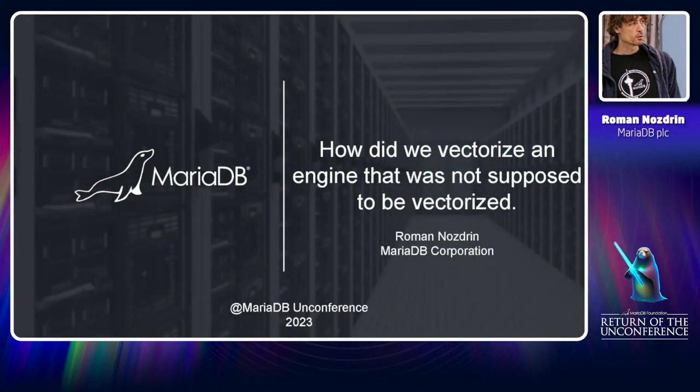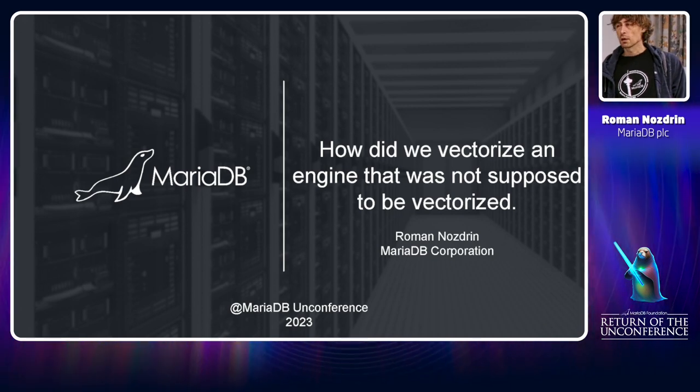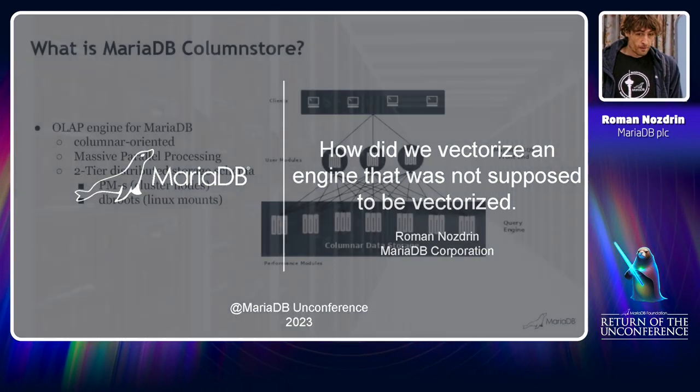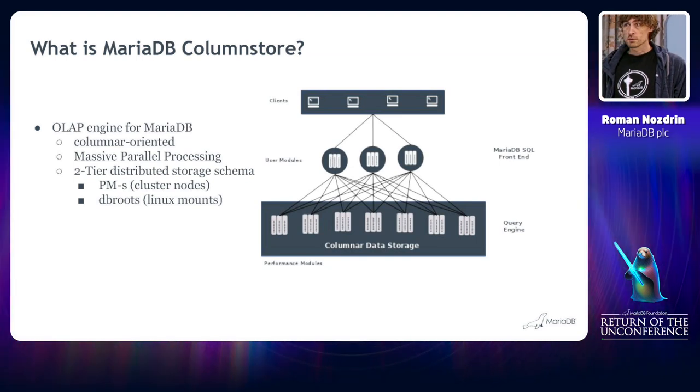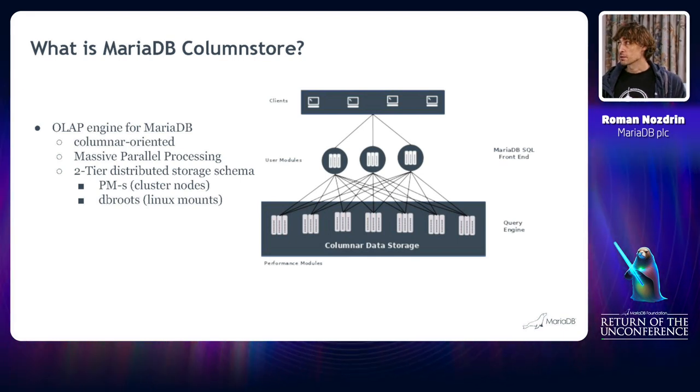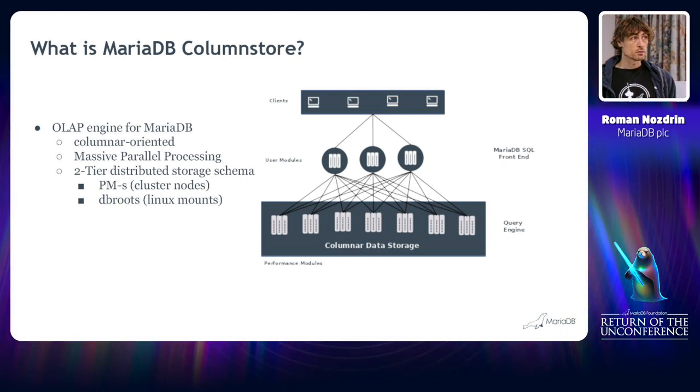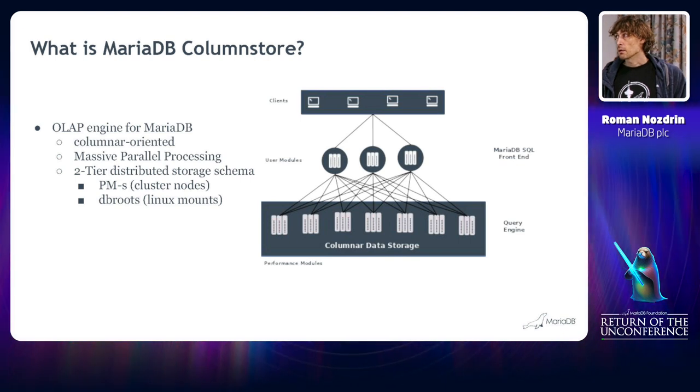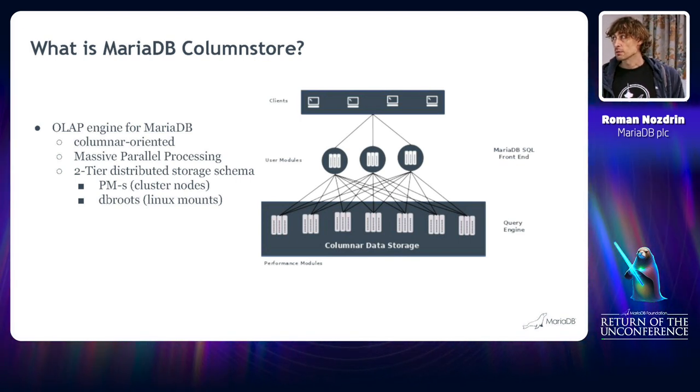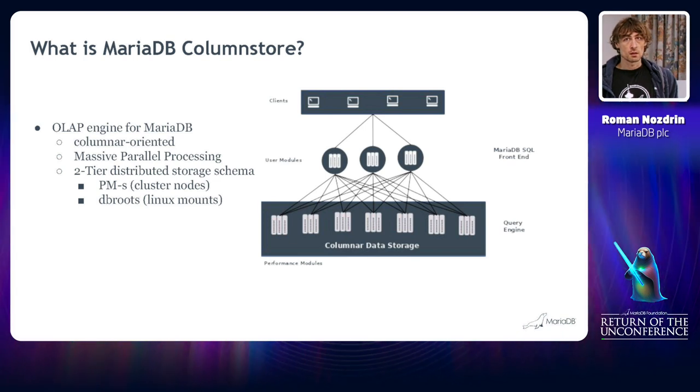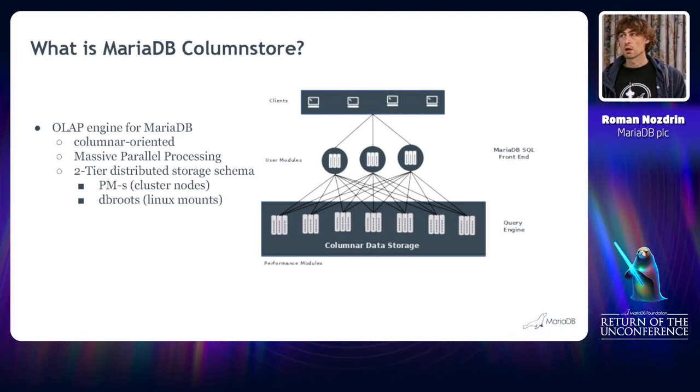Good morning everyone! For those who don't know me, my name is Roman and today I will tell you about the vectorization of the engine that was not supposed to be vectorized. This engine is called ColumnStore and that is the major OLAP engine for MariaDB. It has some fancy properties, like it is column oriented and under the hood it is basically a massive parallel processing software that has a number of nodes potentially and its storage schema is organized with two tiers. First, there is a data distribution between nodes and every node has a number of Linux mounts that we call db-roots. Here's the schema for that.